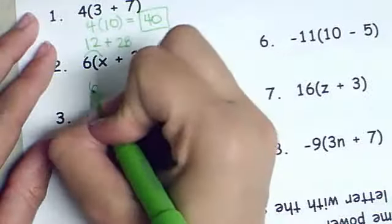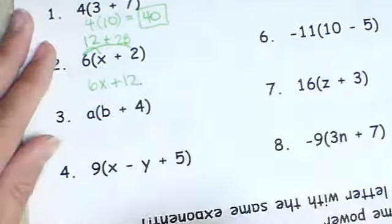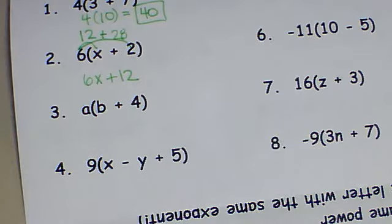If I do 6 times x I get 6x, and 6 times 2 is 12. Be sure that you're always multiplying when you distribute.